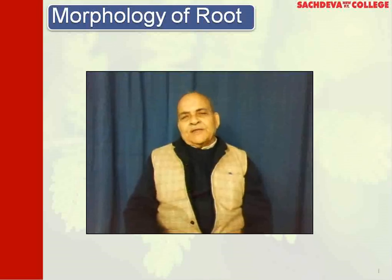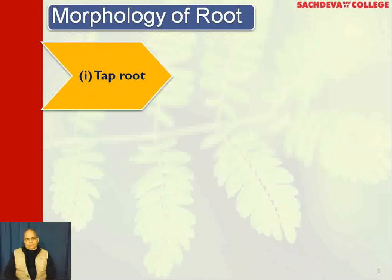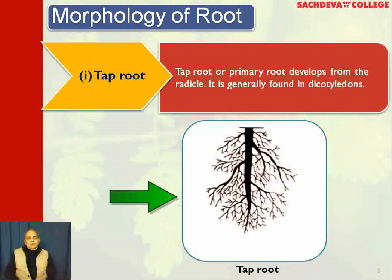Now let us take up the different types of root. Tap root is the primary root which develops from the radicle — that is, the persistent primary root — and it is generally present in dicotyledonous plants. It is the persistent radicle which develops into the tap root system.